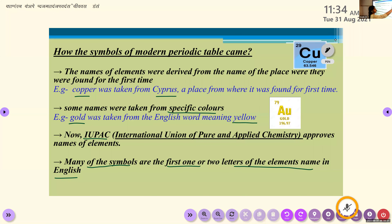Adhikesh, can you please read the points? Yes, ma'am. The names of elements were derived from the name of the place where they were found for the first time — example, copper was taken from Cyprus. Some names were taken from specific colors — example, gold from the English word meaning yellow. IUPAC — International Union of Pure and Applied Chemistry — approves names of elements. Many symbols are the first one or two letters of the element's name in English.